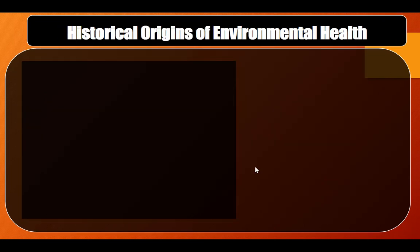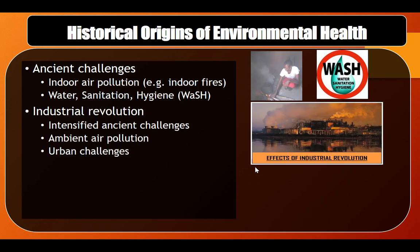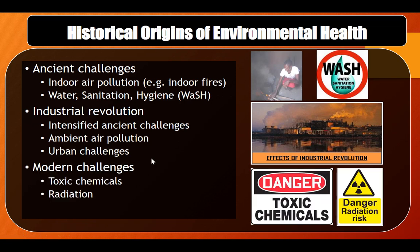Historically, the origins of environmental health essentially go back to the ancient level. Indoor air pollution has been going on for a very long time, such as those produced by indoor fires, and challenges from water quality, sanitation, and hygiene — also known as WASH — have also been going on for a very long time. During the industrial revolution, some of these challenges were intensified: ambient air pollution and urban challenges were added, and recently we have modern challenges such as those produced by toxic chemicals and radiation.